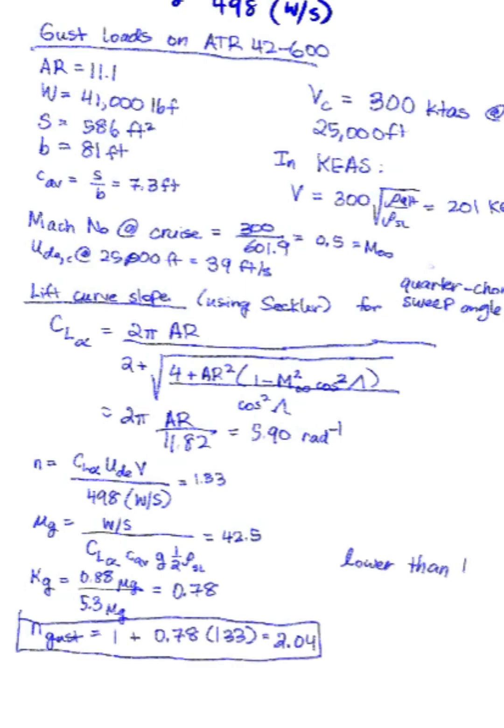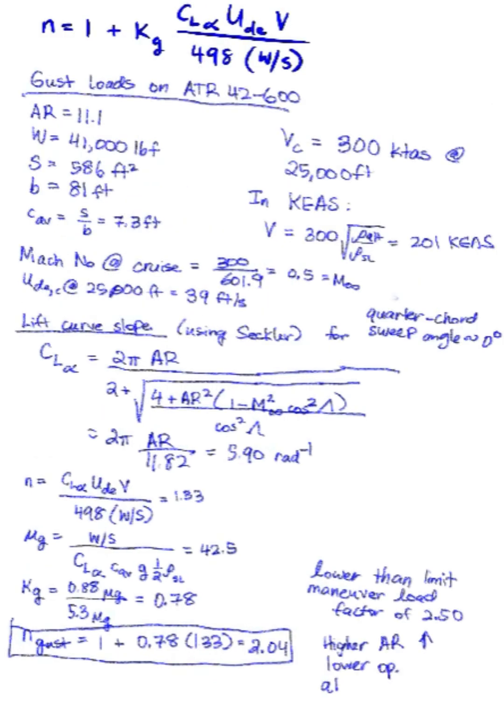And now we can get our gust load factor. So as you can see, this is lower than the limit maneuver load factor of 2.50. And so we want to know how the higher aspect ratio wing or lower operating altitude might affect the gust. It increases it actually. Wing loading also has an effect.